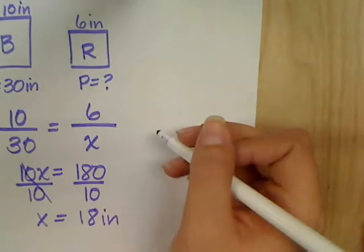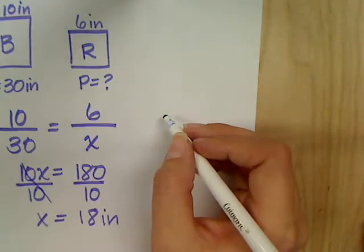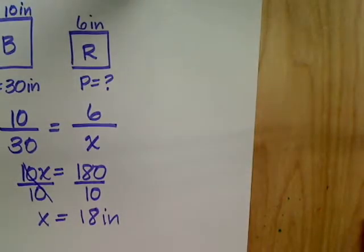So the perimeter is 18 inches. I could have set it up in a number of different ways and still get the same thing. Okay.